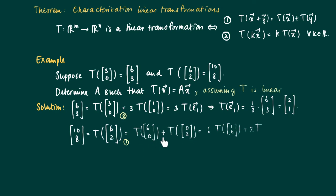Well T of [6,0] is 6 times T of [1,0] plus 2 times T of [0,1], following the second property. We know what T of [1,0] is. This equals T of E1. So we get 6 times T of E1 plus 2 times T of E2.